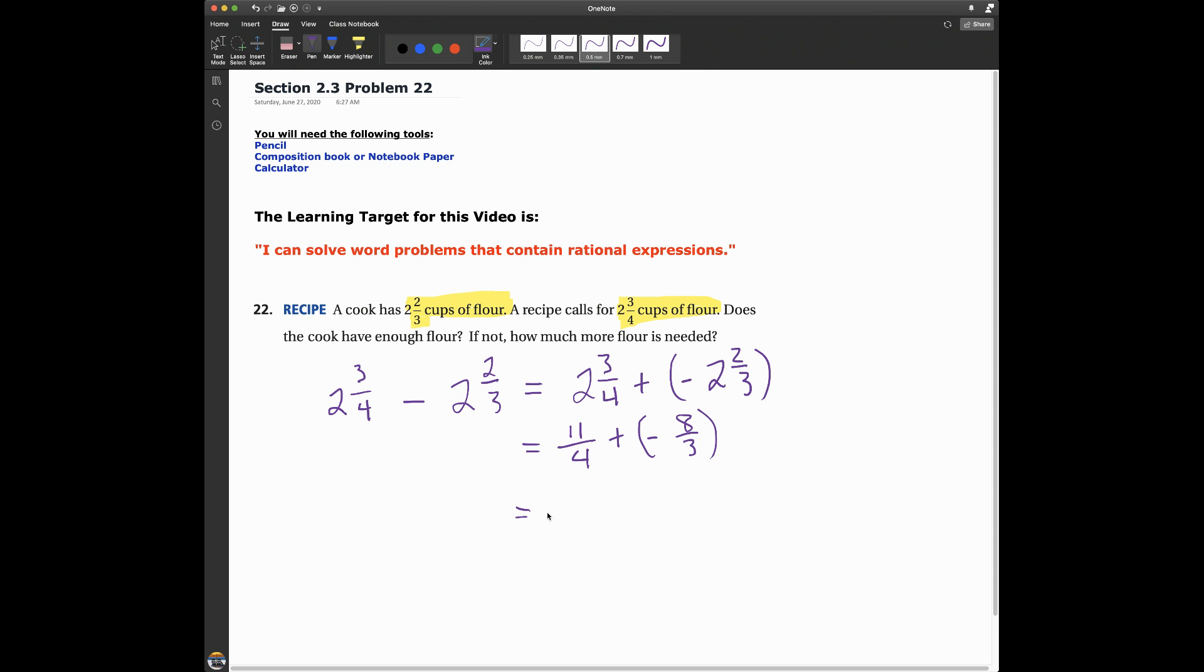We need a common denominator, which would be 12. Four times three is 12, eleven times three is 33. To make this denominator 12, three times four is 12, and eight times four is 32.